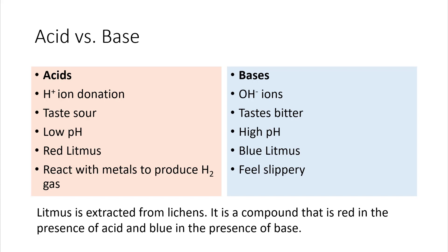Acids versus bases. Acids donate a hydrogen ion, taste sour, have a low pH, turn litmus red, and react with metals to produce hydrogen H2 gas.